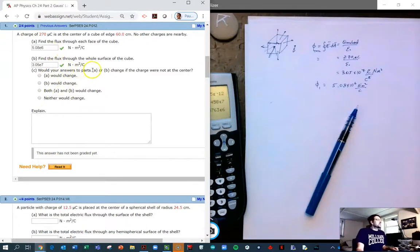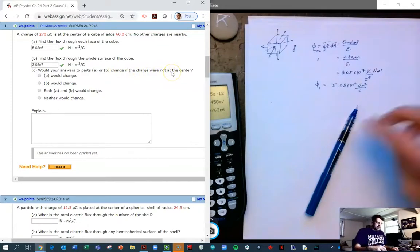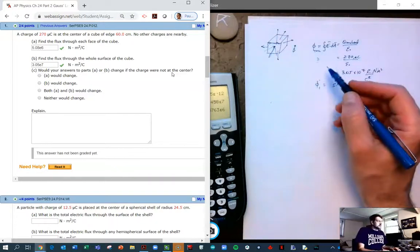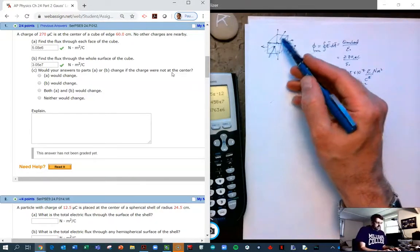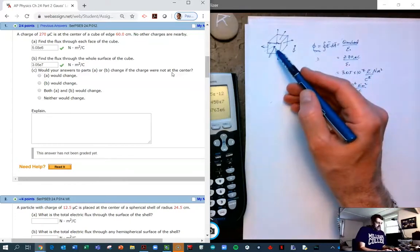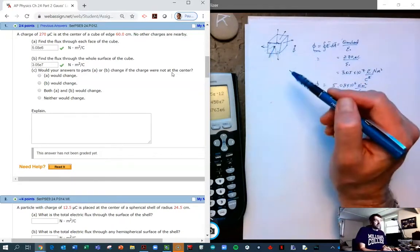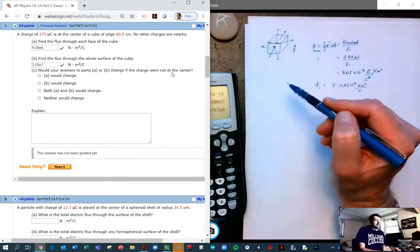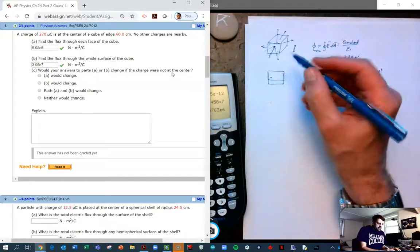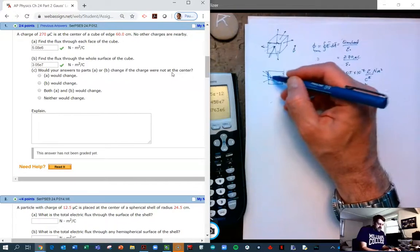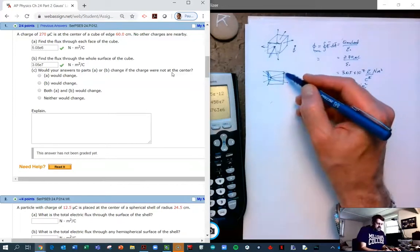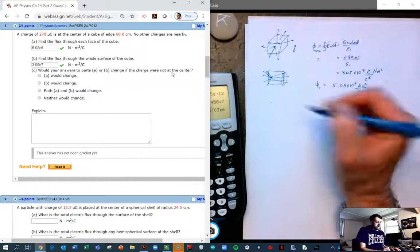So then the question is, would your answers to part A or B change if the charge was not in the center? Well, if it's not in the center, but it's still within the cube, the answer for B would not change at all because the flux through the entire surface is going to be a constant because it's simply the charge enclosed. But if we move it around, then the flux through one side is going to be greater than the flux to the other side. The area of each side is the same. And the electric field is going to be high through this surface and it's going to be very low through this surface because of the density of lines. So the answer for A would change, but not for B.